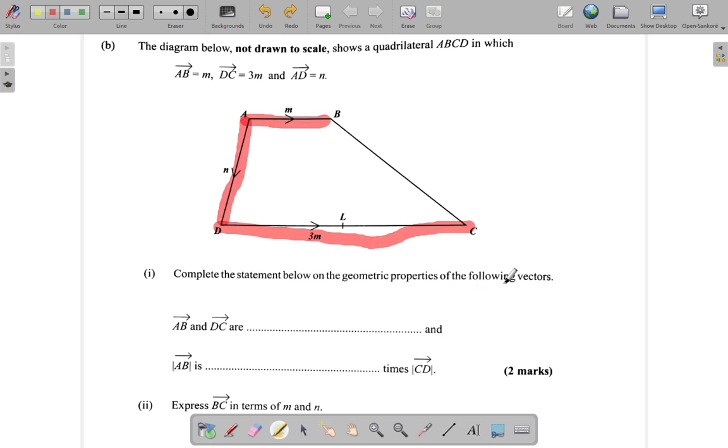Complete the statement below on the geometric properties of the following vectors. Alright, AB and DC. AB and DC are...